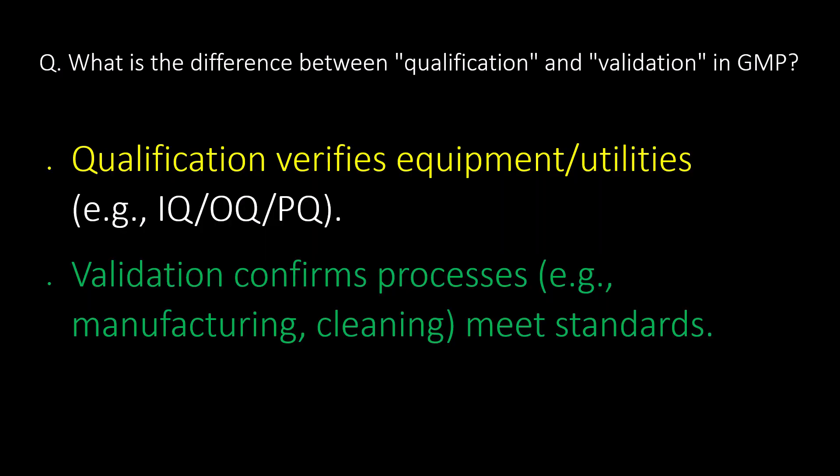What is the difference between qualification and validation in GMP? The basic difference is that qualification verifies equipment or utilities, whereas validation confirms processes — for example, manufacturing or cleaning processes.